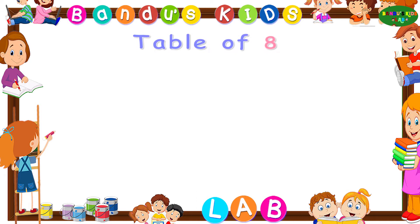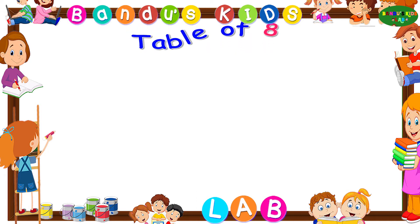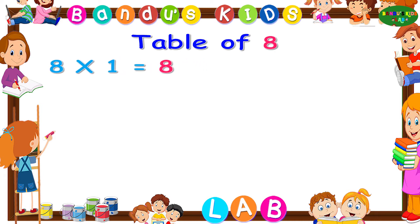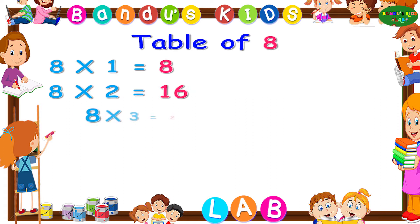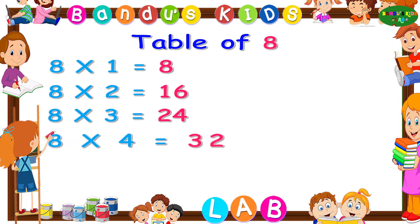Now let's revise the table of eight one more time by singing. Eight ones are eight. Eight twos are 16. Eight threes are 24. Eight fours are 32.